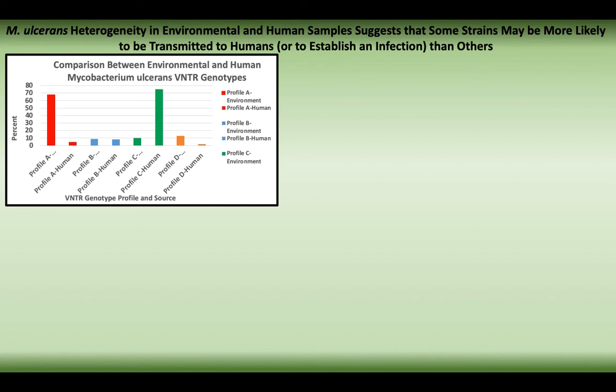We used variable number tandem repeat profiling to compare M. ulcerans and other mycolactone-producing mycobacterial genotypes from human Buruli ulcer cases and environmental samples. Swabs were taken from Buruli ulcer wounds, plated onto growth media, and M. ulcerans isolates were obtained and DNA was extracted. We also collected water, plants, invertebrates, soil, and many different environmental samples from aquatic habitats where Buruli ulcer was endemic, extracted DNA, and then applied VNTR profiling.